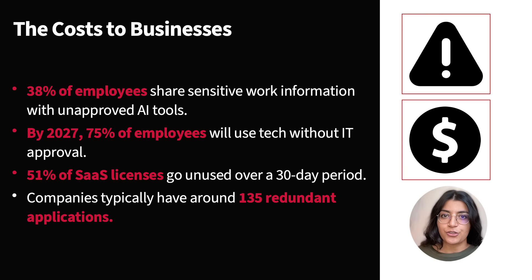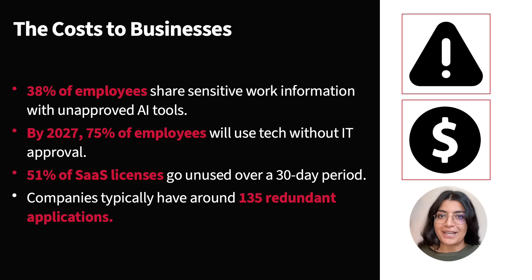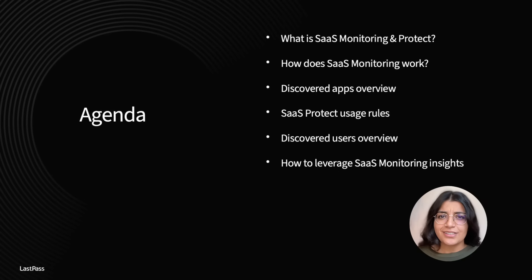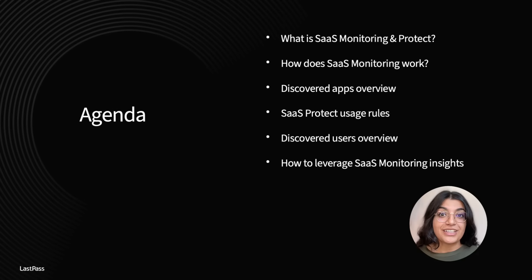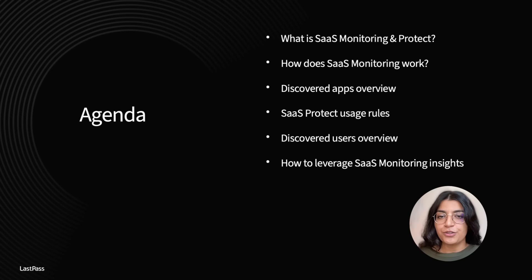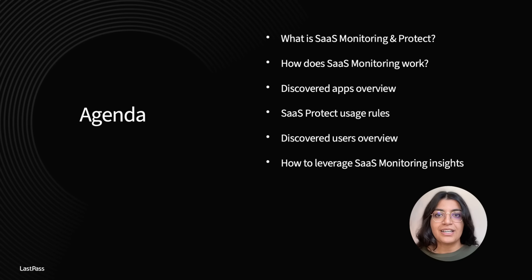Gaining real-time insights into your organization's SaaS and AI usage is essential to protecting your business, ensuring compliance and optimizing costs. We'll start with the basics — what SaaS monitoring is, how it works and how you enable it. Then we'll dive deeper into which insights can be gained from discovered apps and how to take action by setting up SaaS Protect usage rules. Lastly, we'll see an overview of the data from the discovered user's perspective, and explore how the data can help improve security policies and optimize SaaS spending.